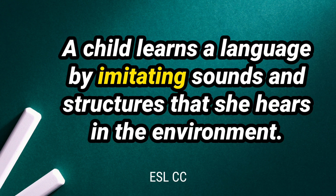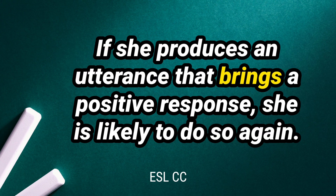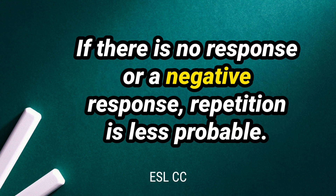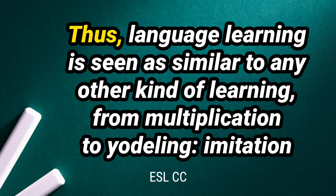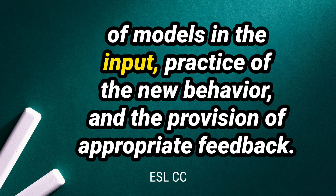A child learns a language by imitating sounds and structures that she hears in the environment. If she produces an utterance that brings a positive response, she is likely to do so again. If there is no response or a negative response, repetition is less probable. Thus, language learning is seen as similar to any other kind of learning — from multiplication to yodeling — involving imitation of models in the input, practice of the new behavior, and the provision of appropriate feedback.